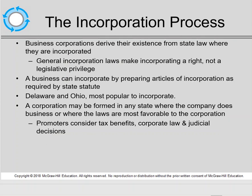Up till now we've talked about pre-incorporation. Now let's talk about how corporations incorporate or come into being. State law will dictate how corporations derive their existence, not federal law. Businesses can incorporate by preparing what's called the Articles of Incorporation, otherwise known as the Charter, as required by the state for which they choose to incorporate. Delaware and Ohio are very common states to incorporate because they have corporate laws that are very favorable. However, the corporation can be formed in any state.